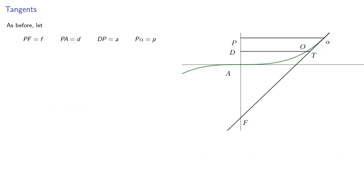So again, as before, we'll let PF equal F, PA equal D, DP equal A, P alpha equal to P, and again, since the curve is Y equals X cubed, P alpha cubed is PA, so P cubed equals D, DO cubed is DA, but this time DA is D minus A.